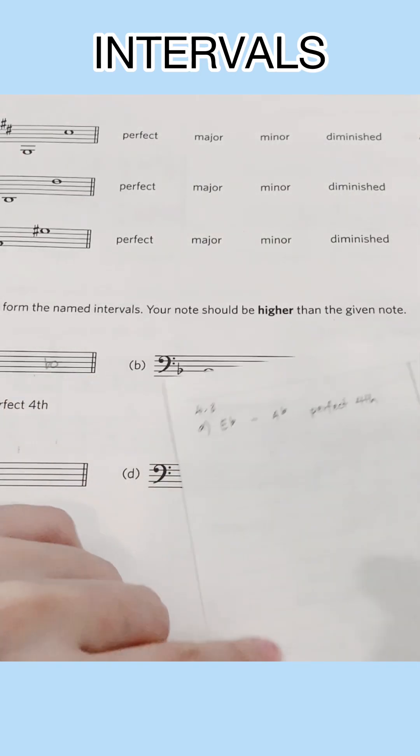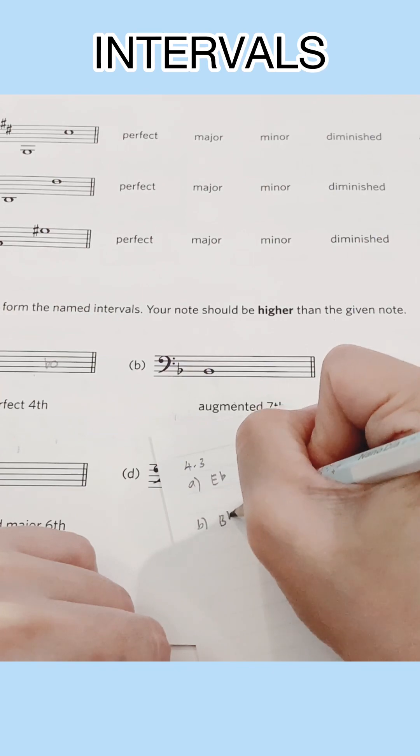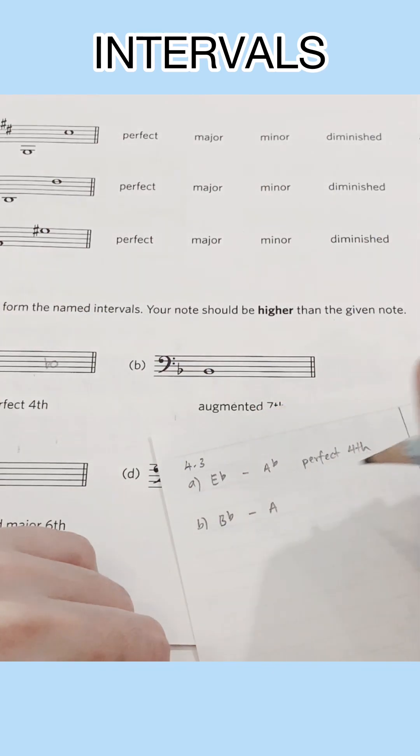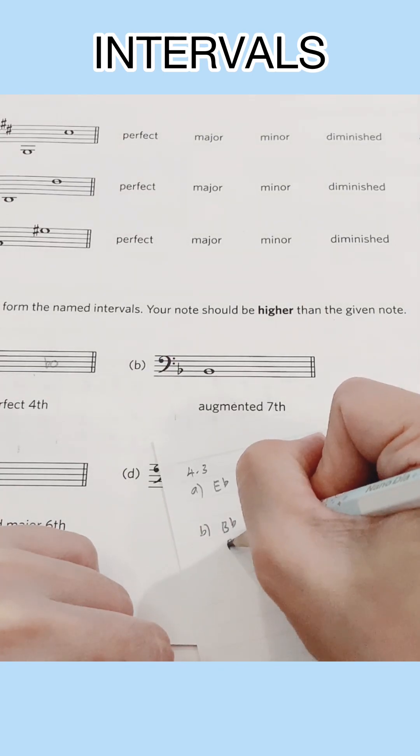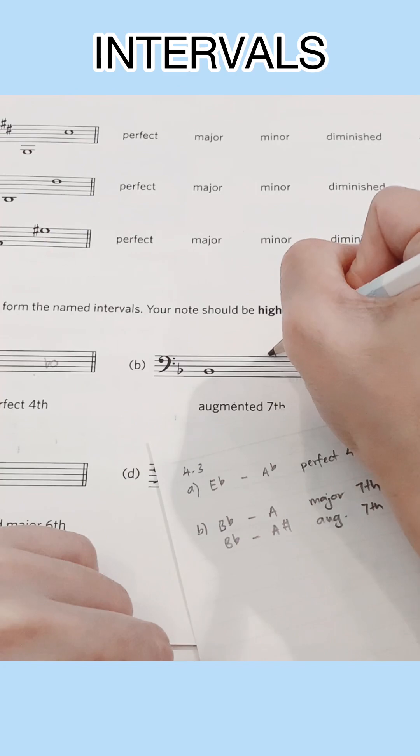Next is an augmented seventh from B flat. So in a B flat major scale, A is a major seventh. If we are to increase the distance from a major to an augmented, then we'll have to raise A to a semitone higher, which is A sharp.